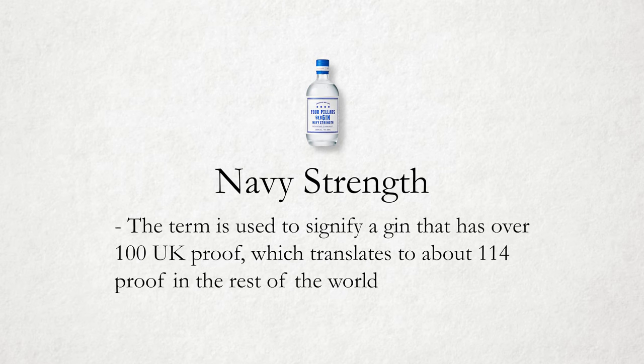The last style is navy strength, which should definitely be considered a style. The term is used to signify a gin that is over 100 UK proof, which translates to about 114 proof in the rest of the world. Legend has it that British naval vessels would store their rum and gin next to the gunpowder below decks. If the spirits weren't of sufficient proof and any leakage occurred soaking into the gunpowder, the gunpowder would no longer spark. So they needed to ensure all spirits were at least 100 UK proof — though do you really want flammable alcohol soaking into gunpowder on a ship?